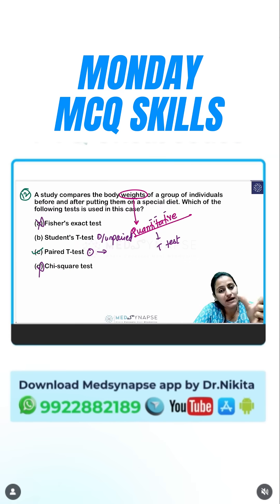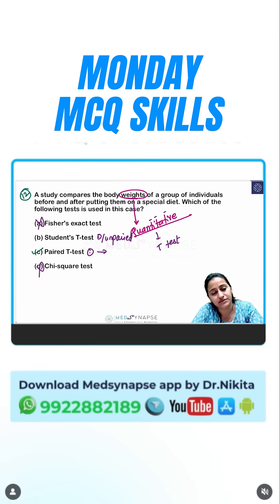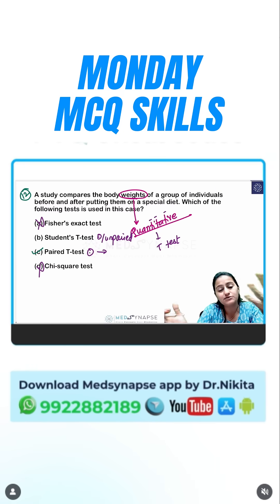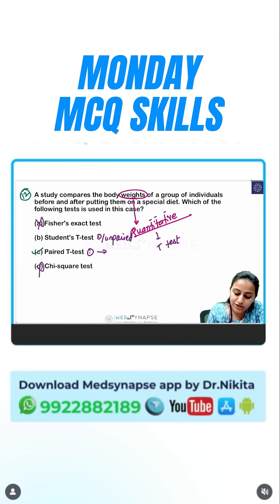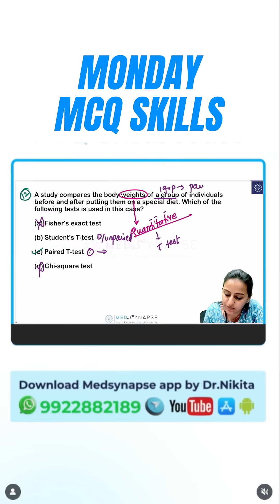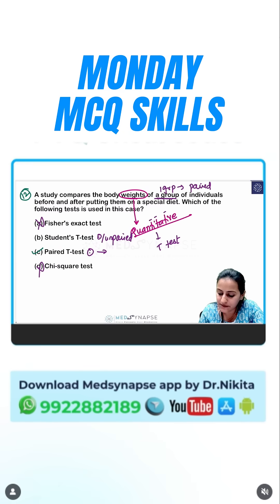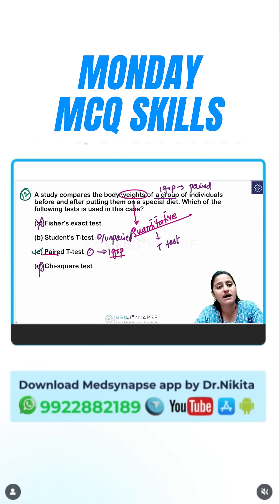Remember: paired is one word, so it is one group — before and after. Unpaired is two words, so there are two groups with two different interventions. Here the study compares the body weights of one group, so one group before and after means it is going to be a paired t-test.